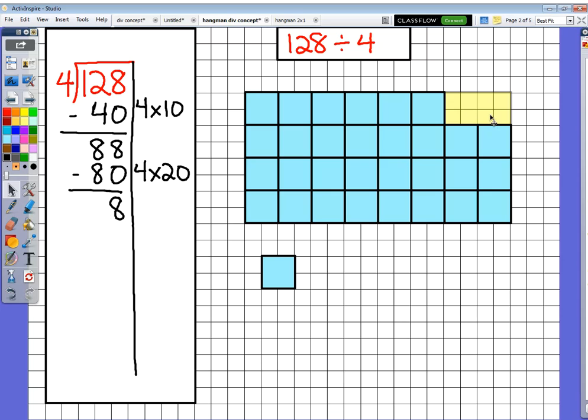So how many more 4's will it take to fill up those last 8 squares? That's easy. I'm going to do 4 times 2 is 8. And that should leave me with a remainder of 0. There's nothing left over. Let's see if that works. 2 squares of 4 covers up that last 8. Great.